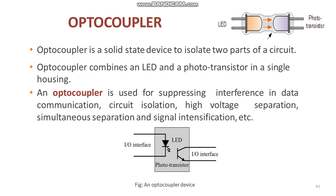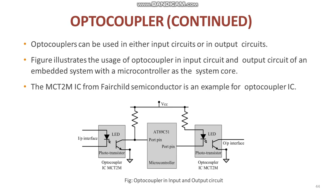Optocouplers can be used in either input circuits or in output circuits. The diagram shows the usage of an optocoupler in the input circuit and the output circuit of an embedded system with a microcontroller as the system core. Optocoupler is available as an IC from different semiconductor manufacturers. MCT2M IC from Fairchild Semiconductor is an example of an optocoupler IC.